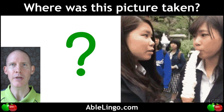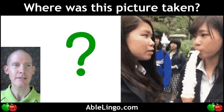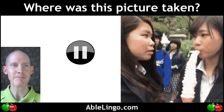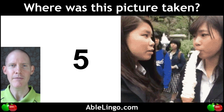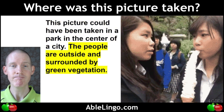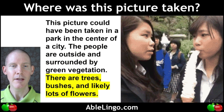Where was this picture taken? It's time to pause the video and figure out your answer. My answer: this picture could have been taken in a park in the center of a city. The people are outside and surrounded by green vegetation. There are trees, bushes, and likely lots of flowers.